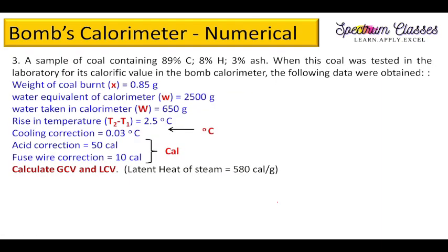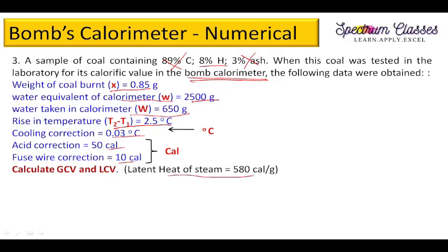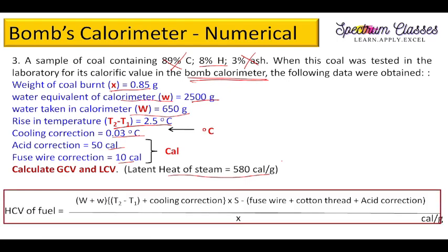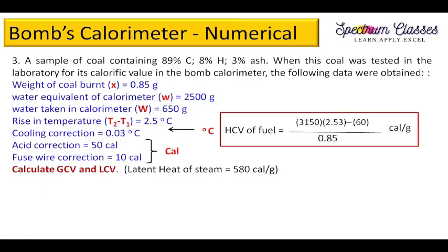The next numerical problem: a sample of coal containing a given percentage of carbon — carbon is not required — and a given percentage of hydrogen. When tested in the bomb calorimeter, the following data are obtained: x (weight of coal burnt), water equivalent of calorimeter (small w), water taken (capital W), T2−T1, cooling correction, acid correction, and fuse wire correction. Latent heat of steam is also given.